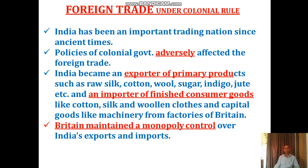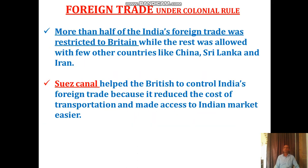For the cheap manufactured consumer goods from the industries of Britain, we had to pay high prices. And for our exports, we were not paid at all — we will understand this later. We had to import cotton, silk, and woolen clothes and capital goods like machinery from the factories of Britain. Britain maintained a monopoly control over India's exports and imports. More than half of India's foreign trade was restricted to Britain — India's trade was only with Britain. With other nations, there was hardly any trade; if there was any, it was with China, Sri Lanka, and Iran.